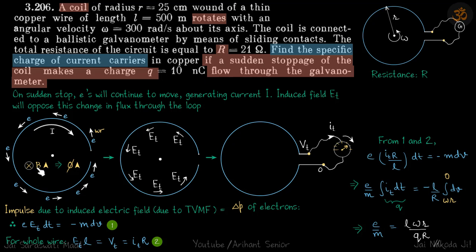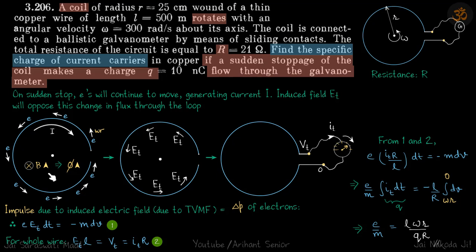This sudden appearance of current means the magnetic field inside the loop starts to increase, which means flux inside the loop increases. Initially, the atoms and electrons both were rotating, so there was no net rotating charge and current was zero, meaning flux was also zero. On suddenly stopping, electrons continue to move, generating a current in the opposite direction, increasing the magnetic field and flux. By Faraday's law, an EMF will be induced in the loop to oppose that change in flux, giving the direction of induced EMF as anti-clockwise.